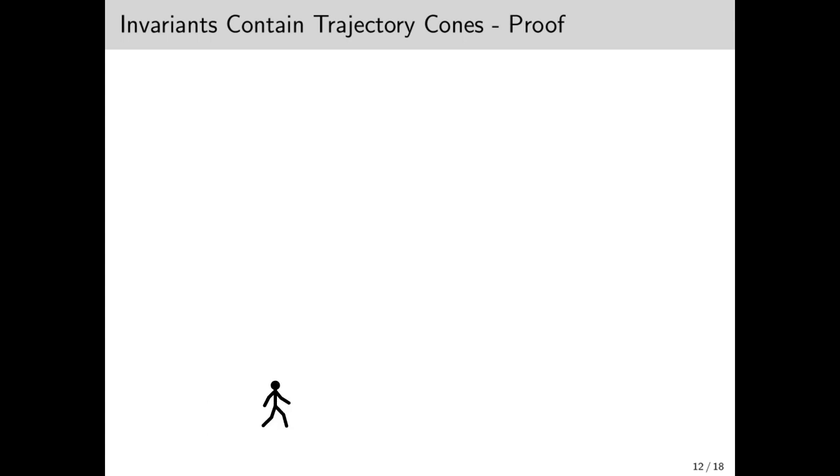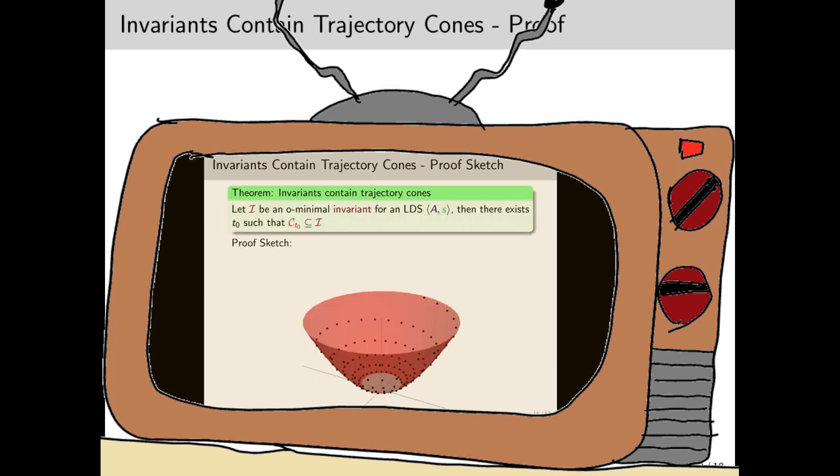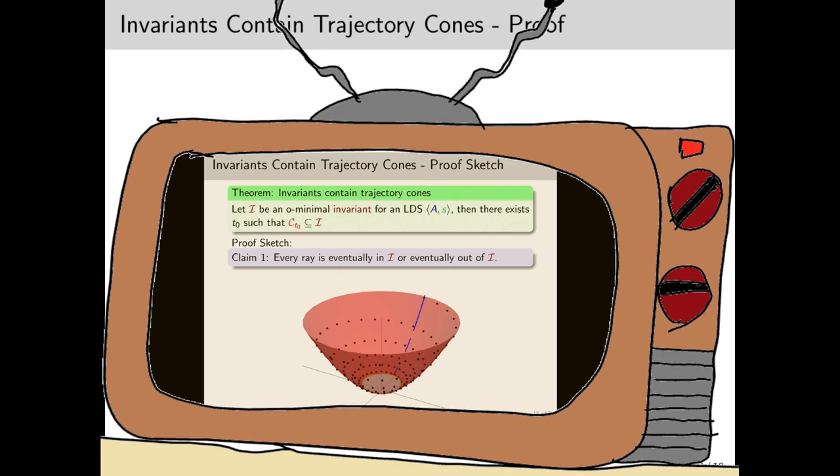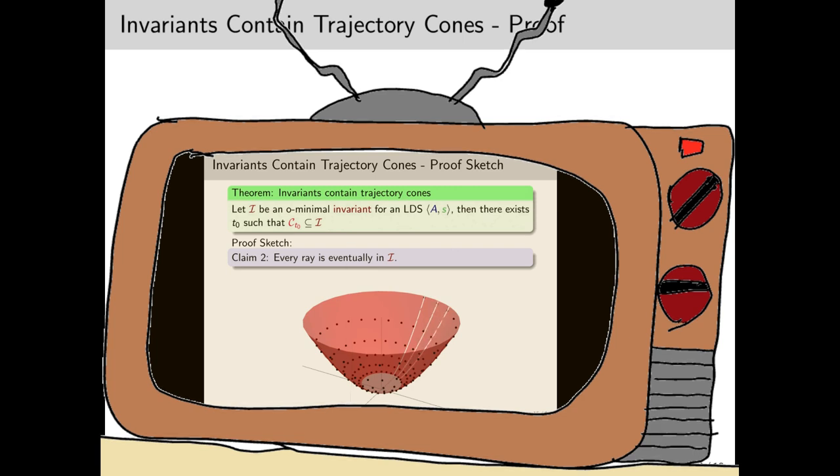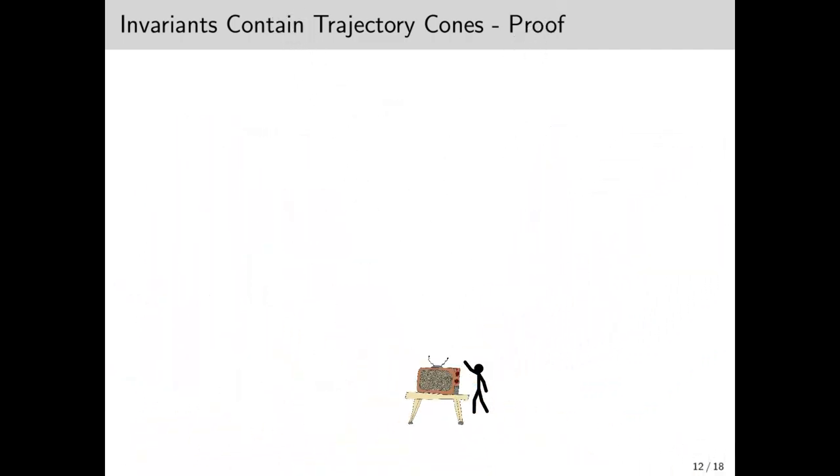This is the more difficult direction. In order to prove that every invariant contains CT0, sorry, let me just bring my TV here. Here we go. I'd like to take you on a stroll down memory lane, back to iCalc 2018, where we studied a similar notion for discrete linear dynamical systems. Here we actually proved the similar characterization works in a discrete setting. The proof of the continuous setting is pretty much identical. Oh, that's a shame. Well, moving on then.